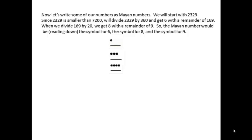Now let's write some of our numbers as Mayan numbers. We'll start with 2329. 2329 is smaller than 7,200 so it's going to be a three place number. We'll divide 2329 by 360 and get six, so the third place will be a six.